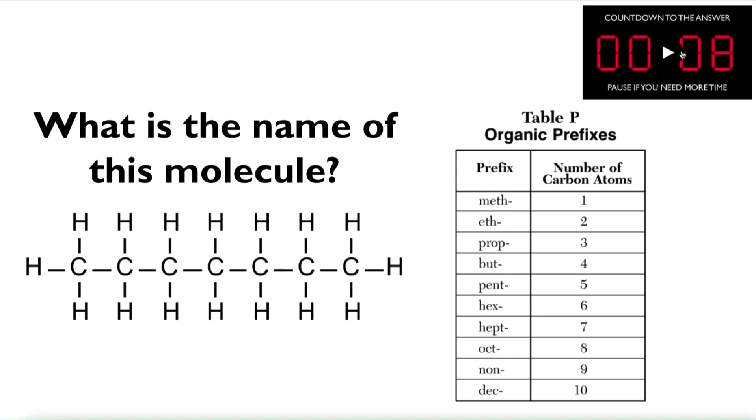So I'm going to first count the carbons and count the hydrogens. If I count them all up, I see that my formula is C7H16. So if I've got 7 carbons, these are all single bonds, and it's a hydrocarbon, that tells me I have an alkane.